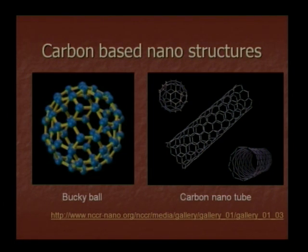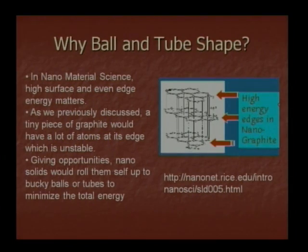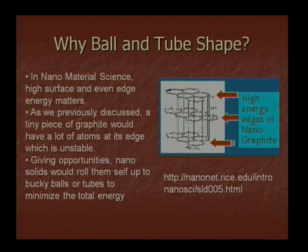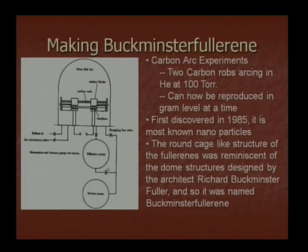Carbon-based nanostructure materials: carbon nanotubes in different shapes can be observed. Why bowl and tube shapes? Because of high energy edges in nano graphite. In nanomaterial science, high surface and edge energy matters. A tiny piece of graphite has many atoms at its edges which is unstable, so nanosolids roll themselves up into buckyballs or tubes to minimize total energy. The aim is to minimize total surface energy.